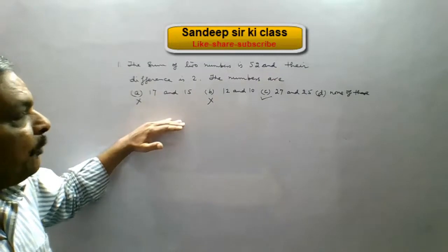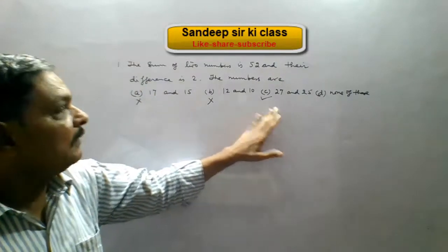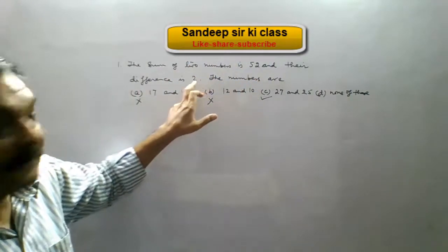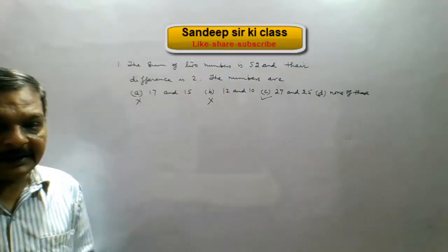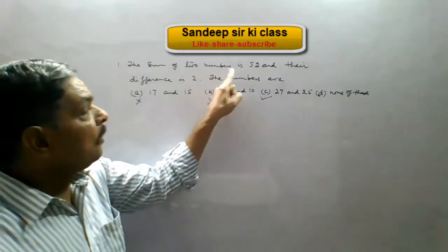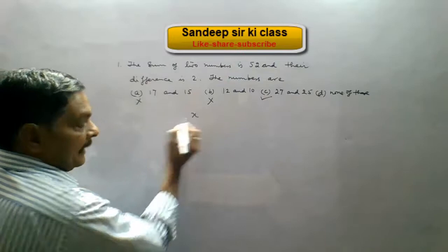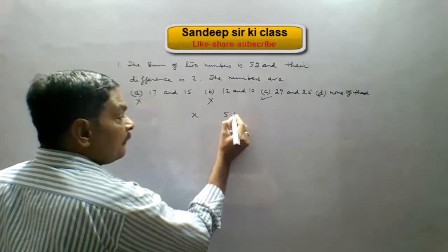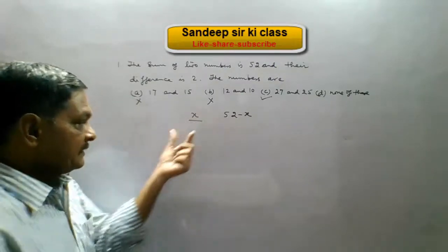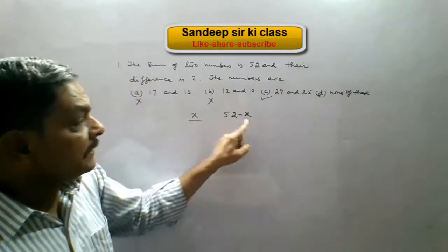Now we will see it from a subjective point of view — supposing the options are not given, how can we find those numbers whose sum is 52 and difference is 2? For that we have to frame equations. If one number is X, then the other number will be 52 minus X, so that their sum is 52.